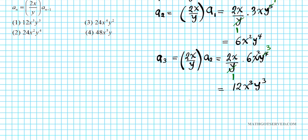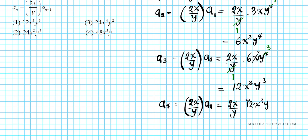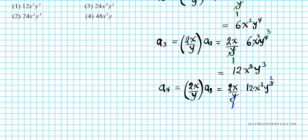We need one more term. A₄ = (2x/y) × A₃ = (2x/y) × 12x³y³. One factor of y cancels, leaving 2 × 12 = 24, giving 24x⁴y². So the fourth term is 24x⁴y². The answer is option number three.